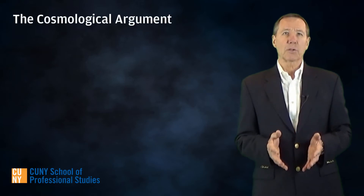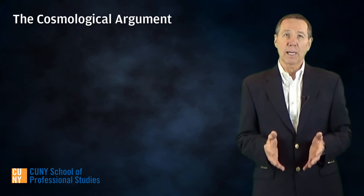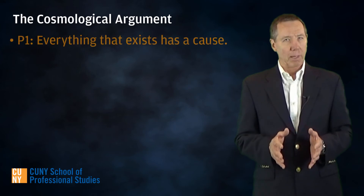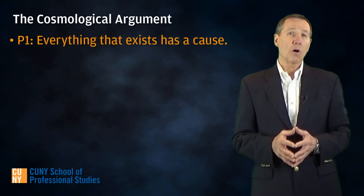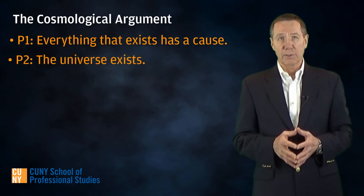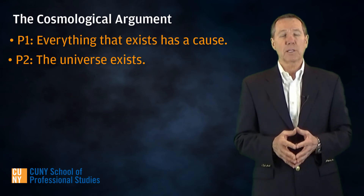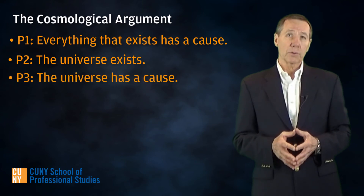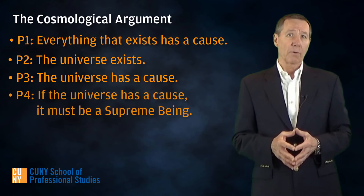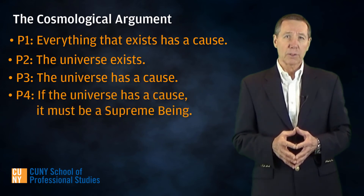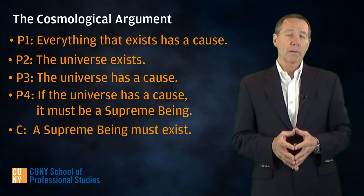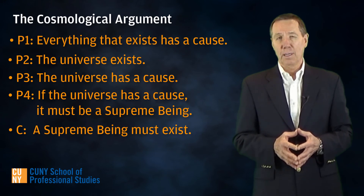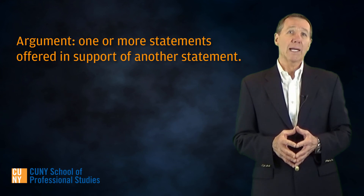I'd like to finish with a quick look at a very famous argument from the history of philosophy. It's called the cosmological argument, and it's an attempt to prove the existence of a supreme being or God. Here's a simple version of the argument. Premise one: everything that exists has a cause of its existence. Premise two: the universe exists. Premise three, also functioning as an intermediate conclusion: the universe has a cause of its existence. Premise four: if the universe has a cause of its existence, then that cause can only be a supreme being. Conclusion: therefore, a supreme being must exist.